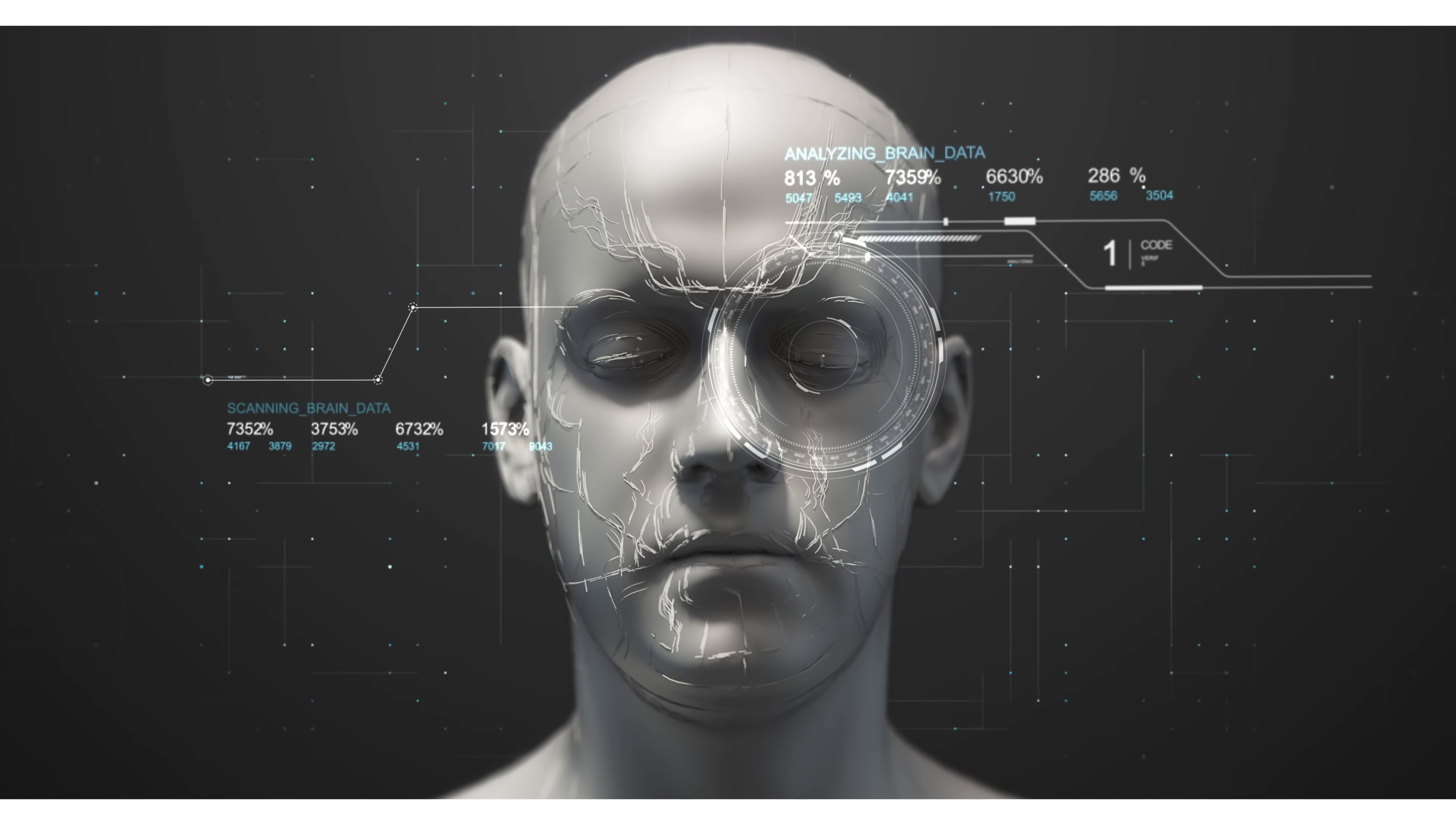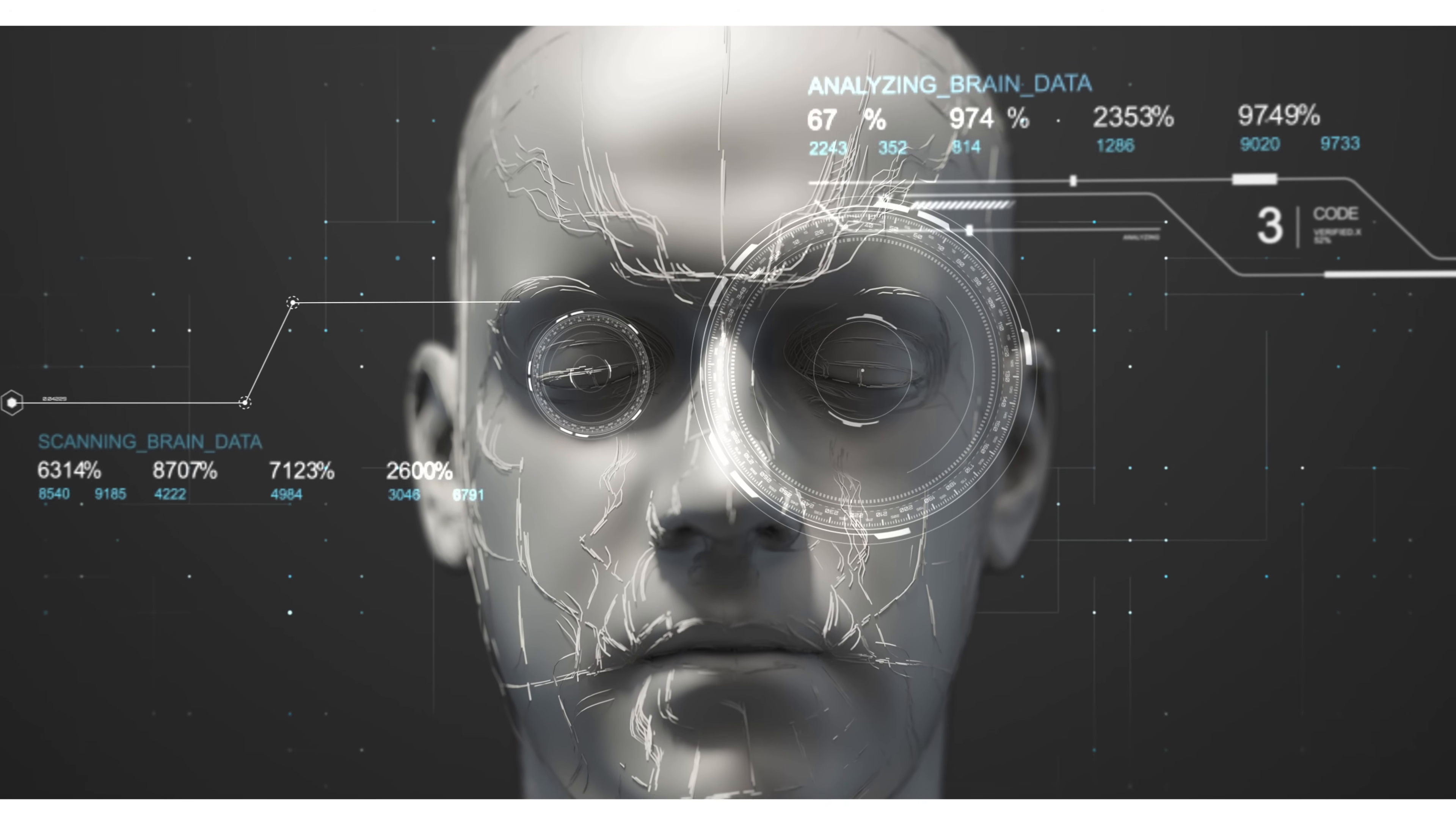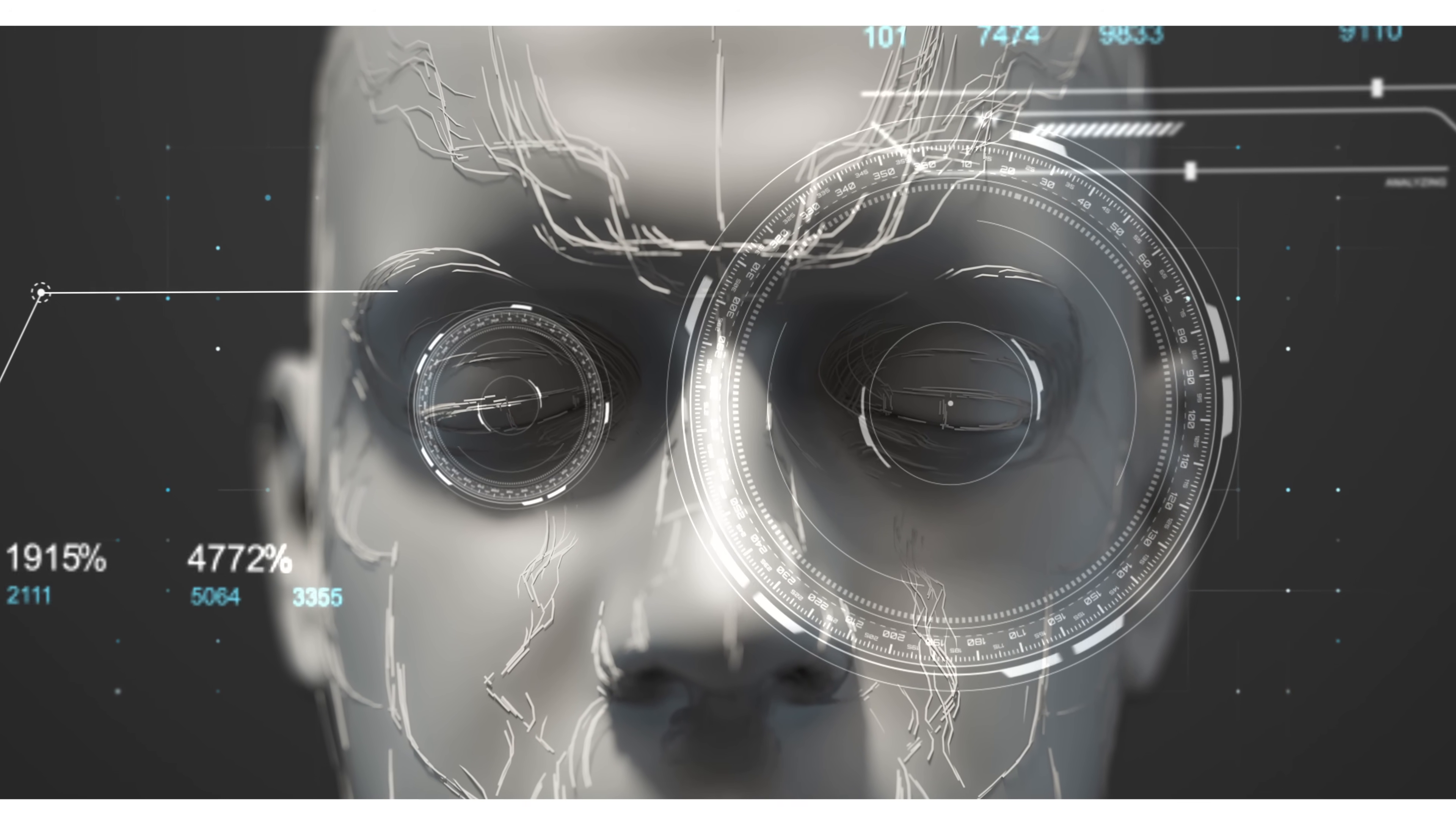What if the trust we place in AI isn't the leap of faith at all? What if, hidden beneath the layers of code and complexity, there is a foundation of absolute certainty, a series of profound mathematical proofs that form the invisible backbone of all artificial intelligence?